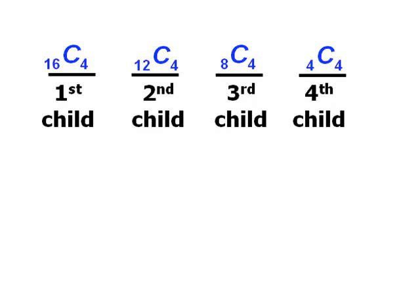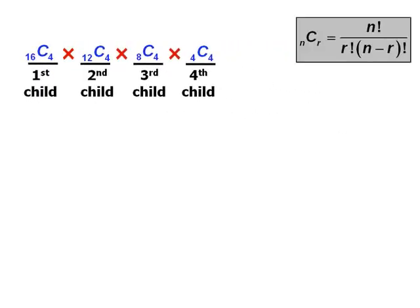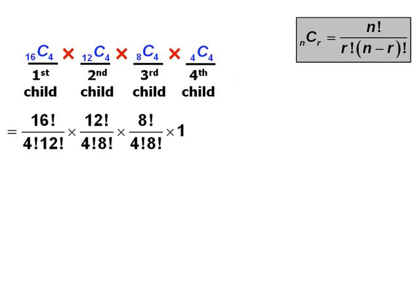So the total number of ways to accomplish the entire task will be the product of each individual stage. At this point, we want to evaluate these values. So we'll use our formula for combinations and apply that formula here to get the following product.